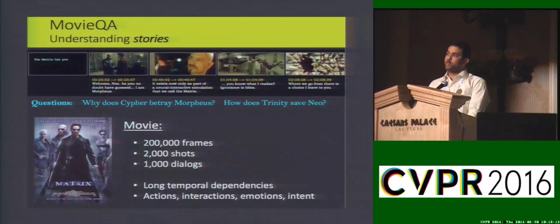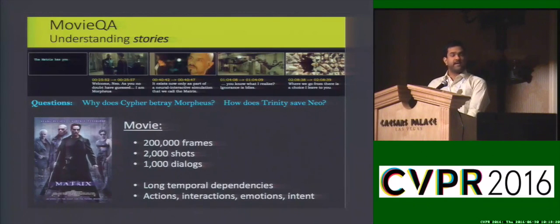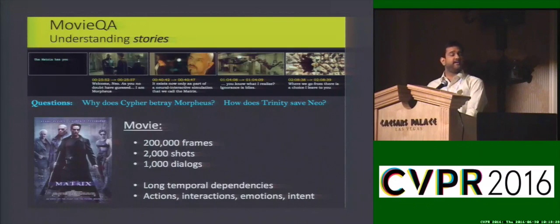We propose to move up one level of abstraction and try to understand stories. We test on movie stories as they provide a perfect test bench and a snapshot of people's lives. They also incorporate long-range temporal dependencies about character actions, emotions, and even intention.